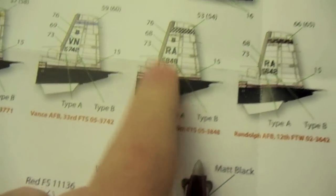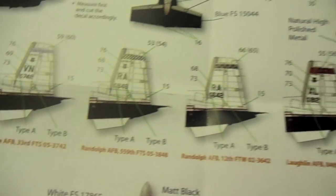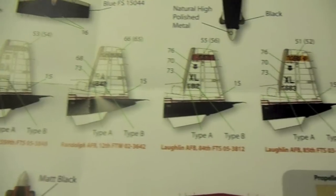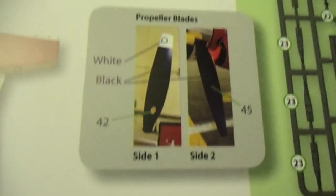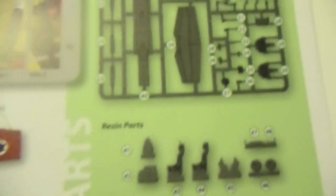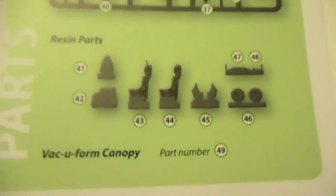Then you got the Israeli decal placement and painting schemes, which is the flight school and aerobatic team. Then you have the propeller blades, and then they show some pictures and the sprues labeled out and the resin pieces.